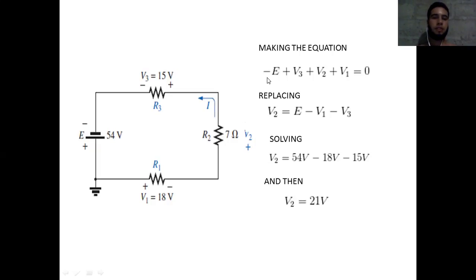The voltage source is with minus E, and the next components are with positive signs. The sum of voltages equals zero. We start: minus E plus V3 plus V2 (that is our unknown) plus V1, which is 18 volts, equals zero.